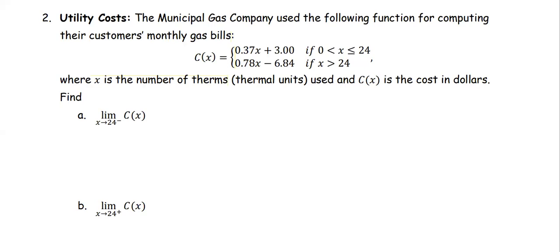For x greater than 0 and less than or equal to 24, the cost is 0.37x plus 3. For x greater than 24, the cost is 0.78x minus 6.84.